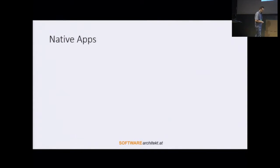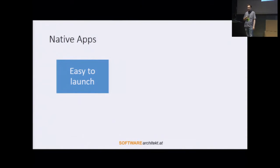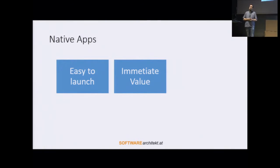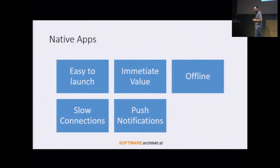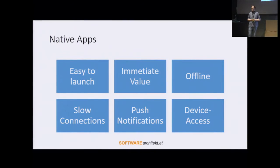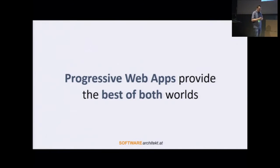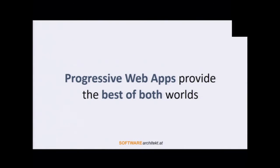But there is also another platform — the platform for native apps. And native apps provide different advantages. For instance, they are very easy to launch: you just touch or click on some icon at the home screen and the native application comes up. They immediately provide value — you can launch them very quickly and they show meaningful information. They also work offline, even when there are slow internet connections. In addition to that, they provide push notifications as well as device access.